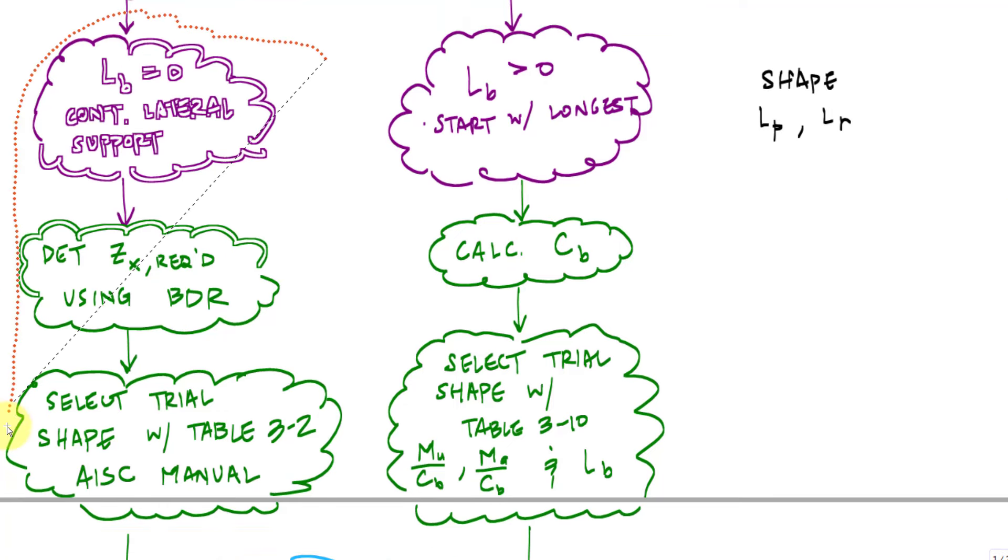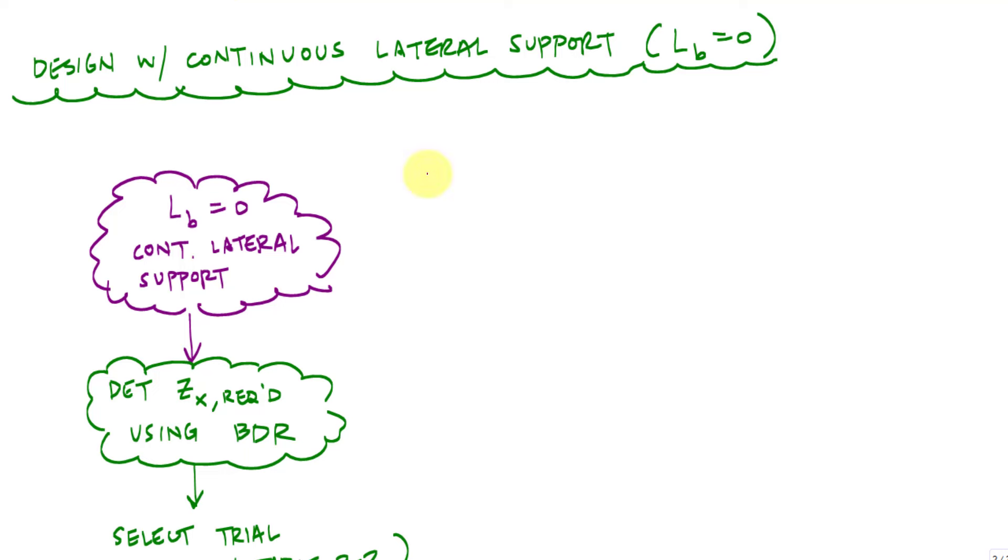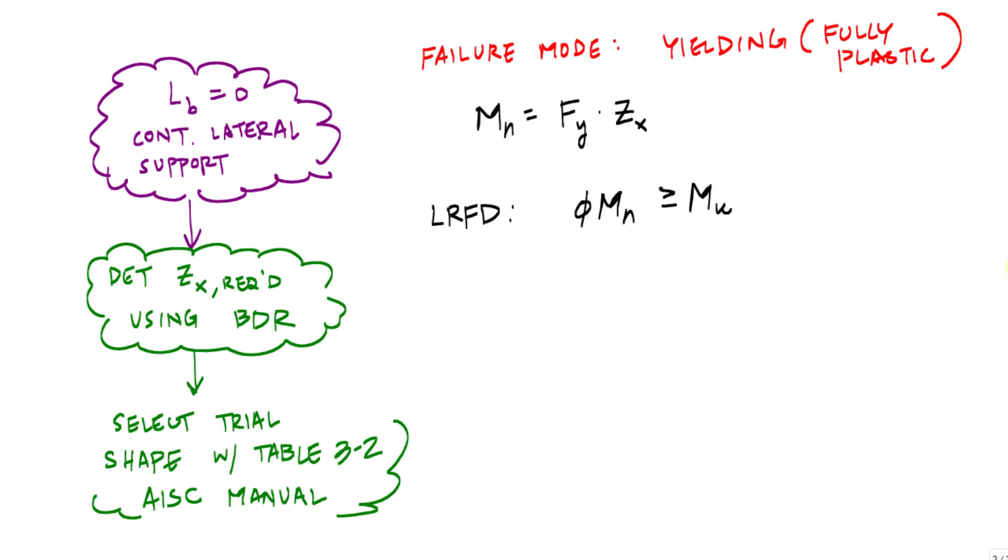Grab this portion. So when LB equals zero, I know my failure mode is yielding or fully plastic. That means my nominal moment strength is the plastic moment Fy times Zx. So here, if I look at LRFD, I can use the BDR to back calculate or create a required plastic section modulus.